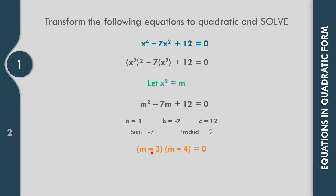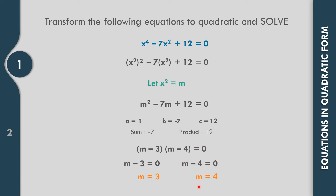Separate the two factors to solve for m. From m - 3 = 0, we get m = 3. From m - 4 = 0, we get m = 4. So we have the two values of m: 3 and 4.